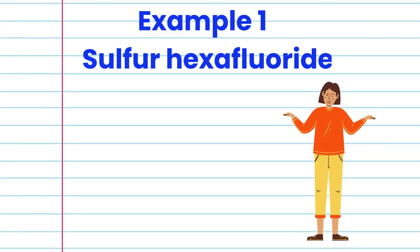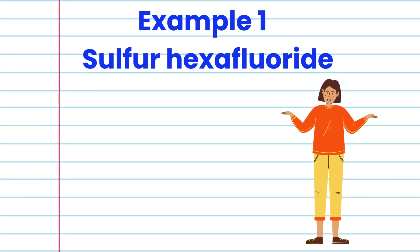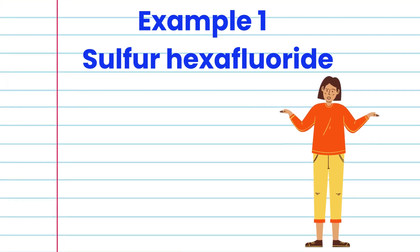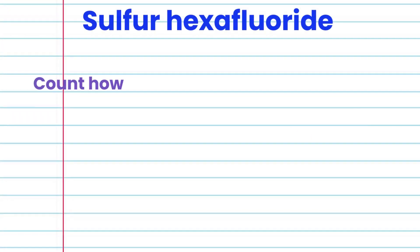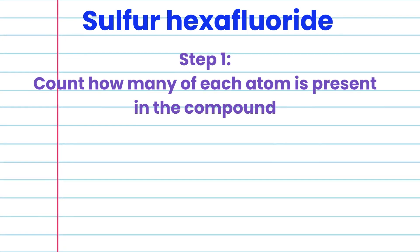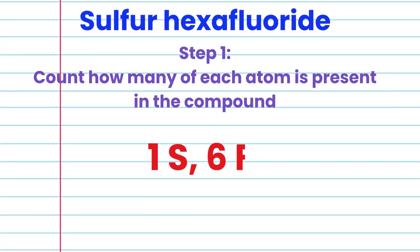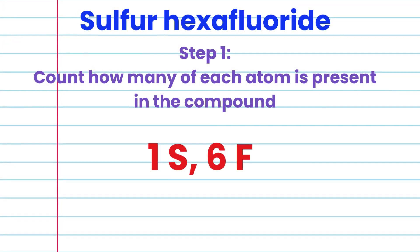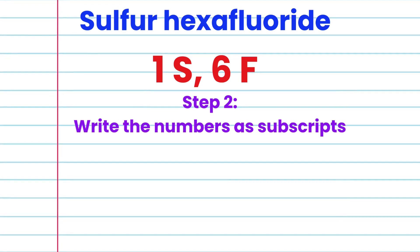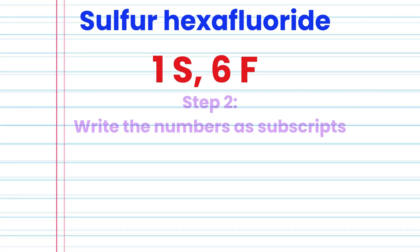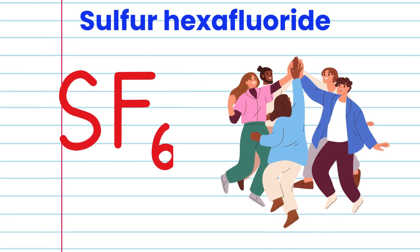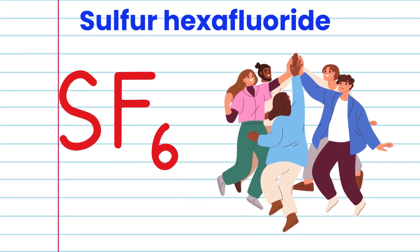Let's look at Example 1. Write the formula for sulfur hexafluoride. Step 1, let's count how many of each atom is present in the compound: 1 sulfur and 6 fluorine. Step 2, we are going to write the numbers as subscripts. 1 is not written as a subscript. So the formula is SF6.